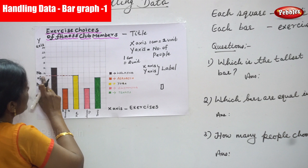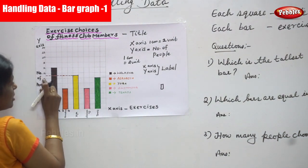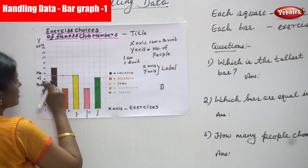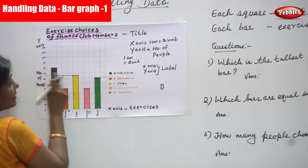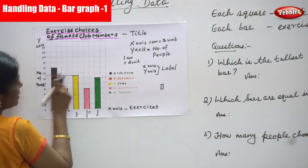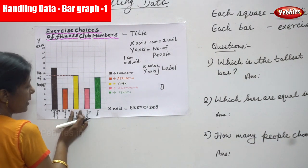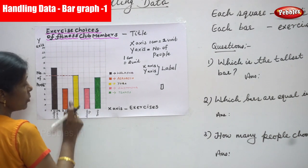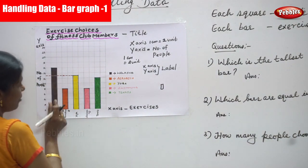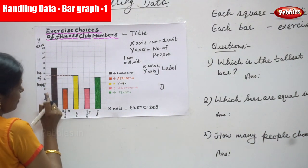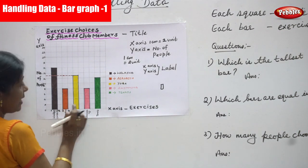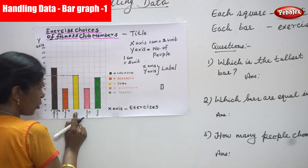How many people chose yoga? That is 13 people. Since each square is two units, the middle of 12 and 14 represents 13. So 13 people chose yoga. From x-axis to y-axis I draw the vertical bar and shade it in yellow color.